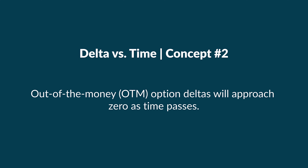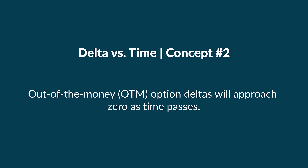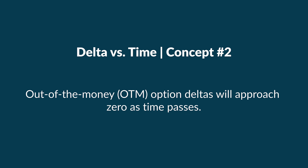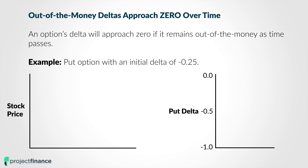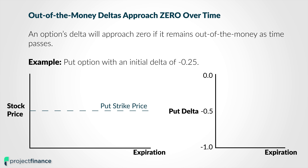The second concept is the complete opposite of the first: out-of-the-money options will see their deltas approach 0 as time passes and as expiration approaches. For example, if you short a put option with 30 days to expiration and that put option has an initial delta value of negative 0.25, and 29 days later the stock price has not changed, that delta is going to be much closer to zero. From 30 days to one day to expiration, if the stock price has not changed and that put option is still out of the money, that put option is going to have a delta very close to zero, as opposed to the initial delta of negative 0.25.